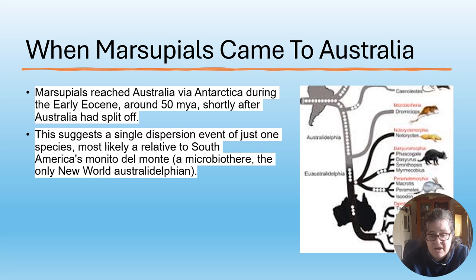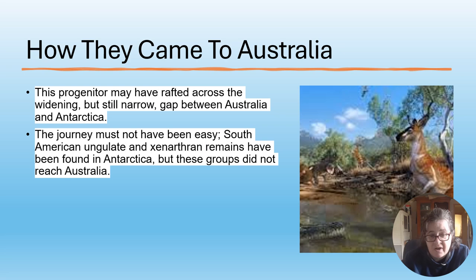Marsupials reached Australia via Antarctica during the early Eocene, around 15 million years ago, shortly after Australia had split off. This suggests a single dispersal event of just one species, likely a relative of South America's Monito del Monte. This progenitor may have rafted across the widening but still narrow gap between Australia and Antarctica, though the journey must not have been easy. South American ungulate and other remains have been found in Antarctica, but these groups did not reach Australia.